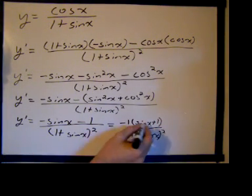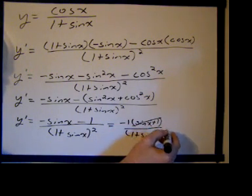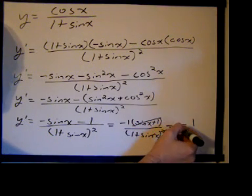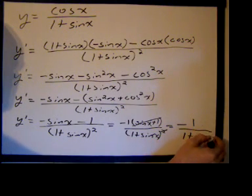Well, now I have sine of x plus 1 over, essentially, sine of x plus 1. It's the same thing, so I can actually cancel one of those in the denominator, and the derivative becomes much simpler. So I get negative 1 over 1 plus the sine of x.